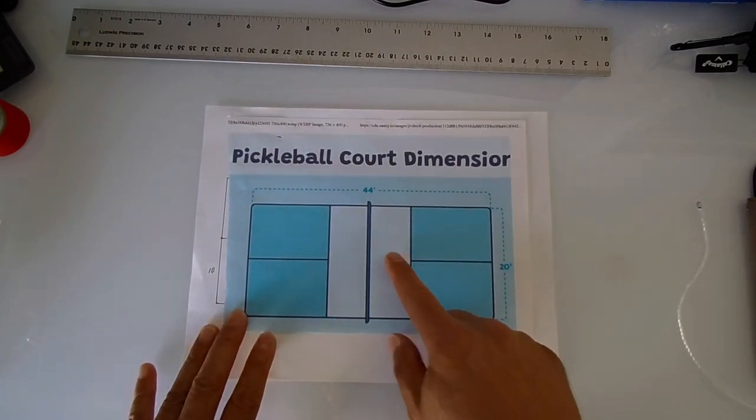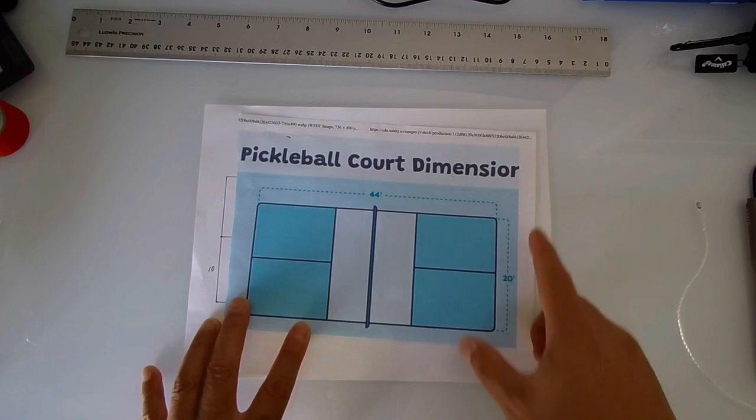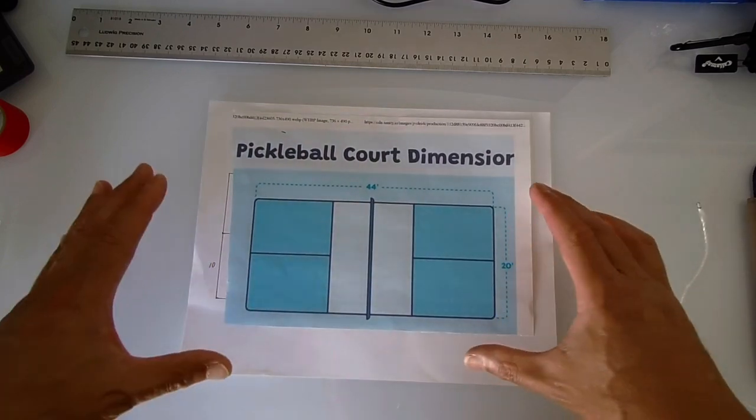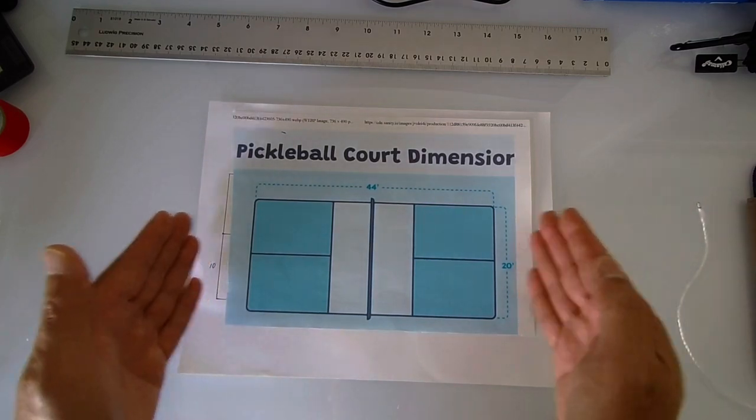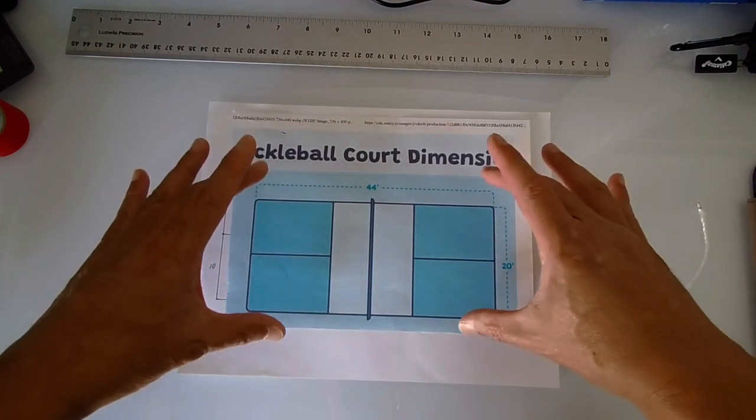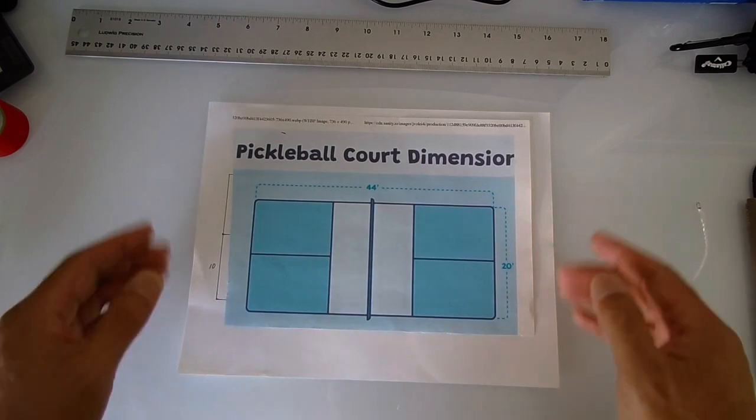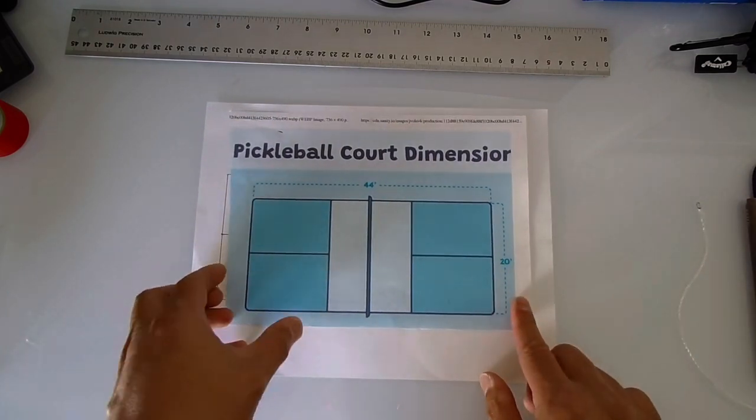So here the pickleball court is about 44 feet by 20 feet. That's how much you need to make the lines. Of course you need some space beyond that to actually play, particularly in the back. The sides you don't need as much as the back, but that's the minimum you need.